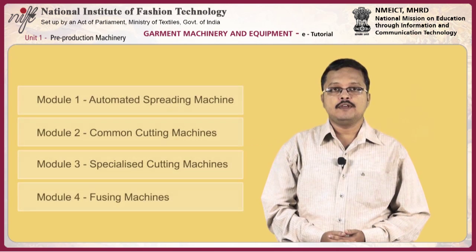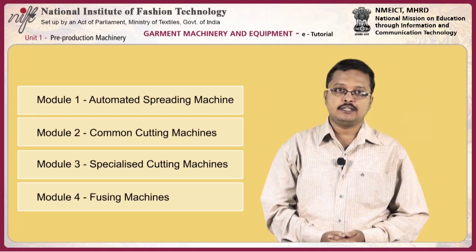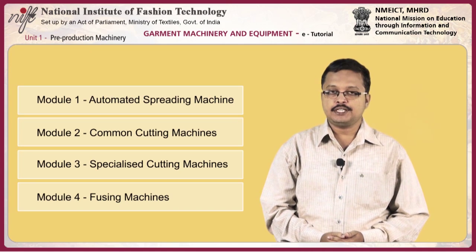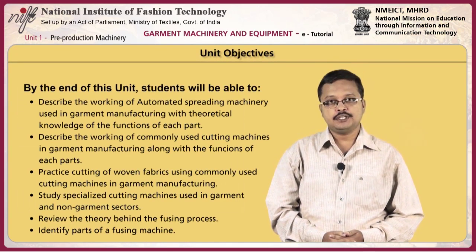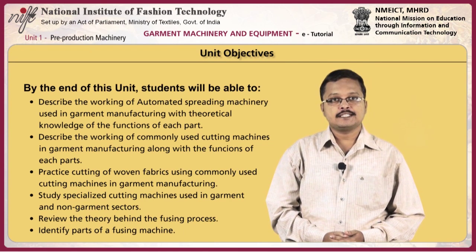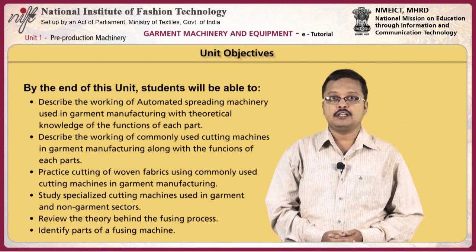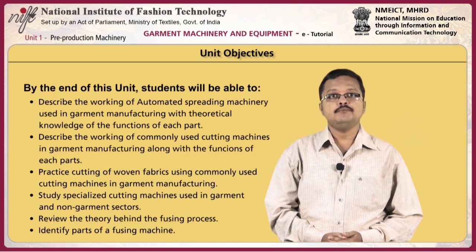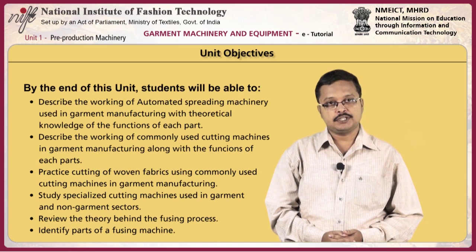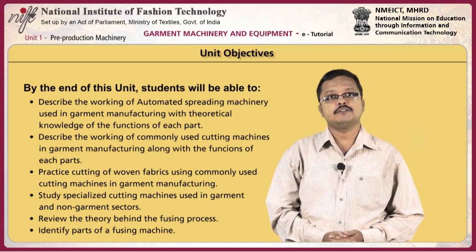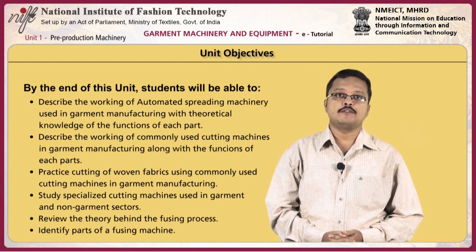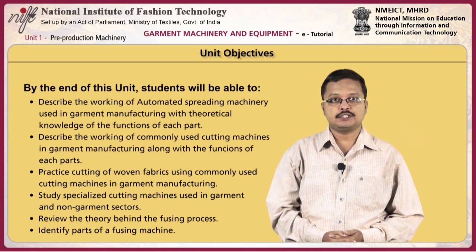In the first unit, Pre-production Machinery, you will understand the use of pre-production machinery in a garment manufacturing unit. This unit comprises of four modules and a final review section. By the end of this unit, students will be able to: describe the working of automated spreading machinery, describe the working of commonly used cutting machines, practice cutting of woven fabrics, and study specialized cutting machines used in garment and non-garment sectors.